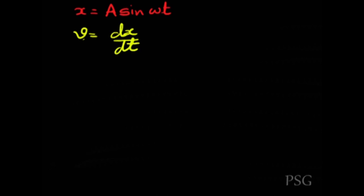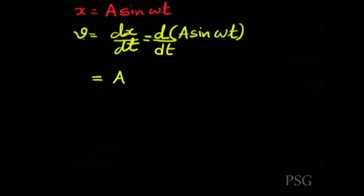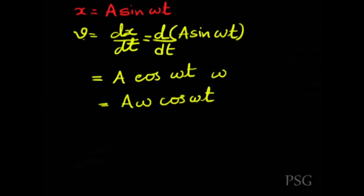Taking x = A·sin(ωt), dropping the phase constant φ for now, this is the general equation for displacement. The general equation for velocity of a body performing SHM: velocity v = dx/dt = d/dt of A·sin(ωt). Since A is a constant, and the derivative of sin is cosine, v = Aω·cos(ωt).